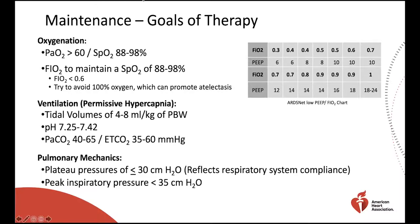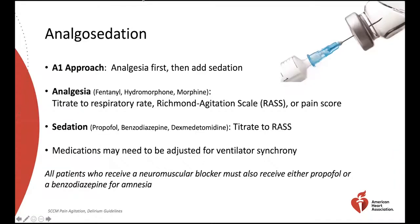Patients who require mechanical ventilation will require analgesia and sedation. Analgesia agents such as fentanyl, hydromorphone, or morphine should be administered before sedatives unless the patient is paralyzed. Pain medications can be titrated to respiratory rate, the Richmond Agitation-Sedation Scale (RASS), or pain score.